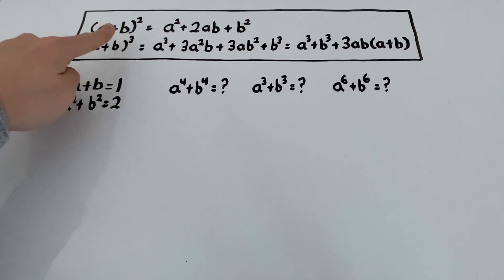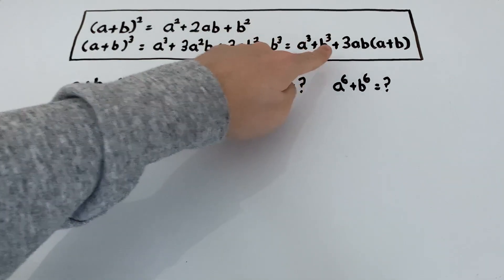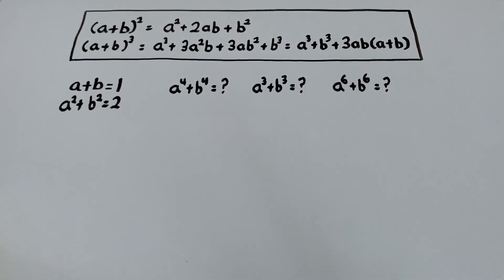So the top one says a plus b squared is equal to a squared plus 2ab plus b squared. And the bottom one says a plus b cubed is equal to a cubed plus 3a squared b plus 3ab squared plus b cubed, which can be simplified to the final form on the right: a cubed plus b cubed plus 3ab times a plus b.